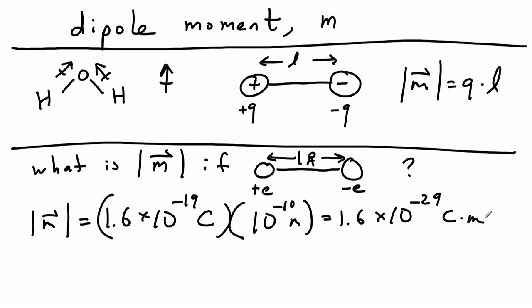And this is a pretty small number, and so we can see that a coulomb meter would be a huge amount of dipole moment. And so we have to work with such small fractions of a coulomb meter that it's conventional to work with a much smaller unit called the debye.